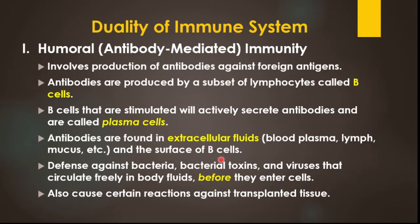If you want to find antibodies in any cell, you take a person's blood and centrifuge it. Plasma is separated and RBC settles down — the RBC layer settles at the bottom and plasma rises to the surface. That white-colored fluid is blood plasma, and that plasma has antibodies for the specific antigen. Antibodies provide defense against bacteria, bacterial toxins, and viruses that circulate freely in body fluids before they enter cells.